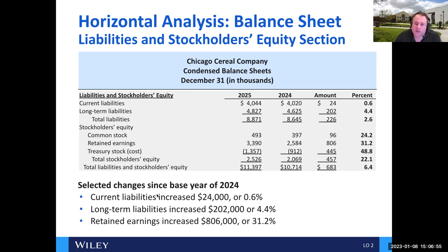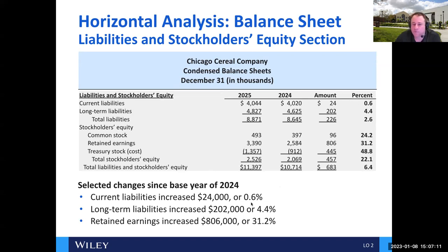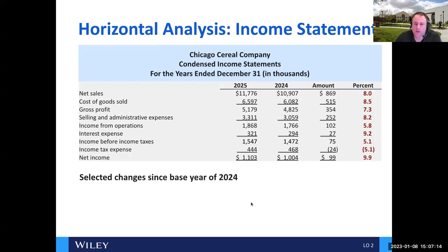Looking at the computation: these are in thousands, so 44,040 minus 40,020 is a change of 24. For current liabilities, taking 24 divided by 40,020 — the first year — gives an increase of about 0.6%. That's the same horizontal analysis computation.